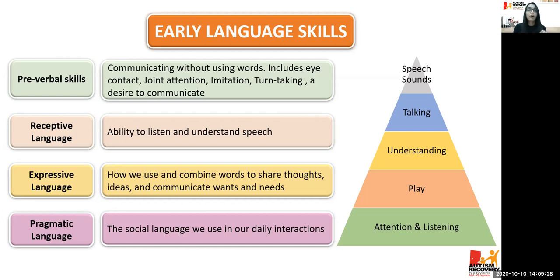The foundation skills, also called pre-verbal skills, are basically communicating without using words. They include eye contact — children as young as around one year old start to request by looking at us, and most of our kids have problems with eye contact. Then joint attention, where both adult and child focus on the same object at the same time; imitation, which is copying the actions of others; turn-taking in play skills, such as rolling a ball back and forth; and a desire to communicate.